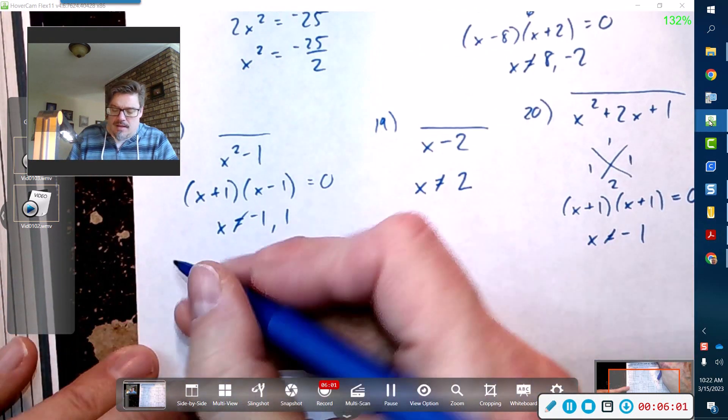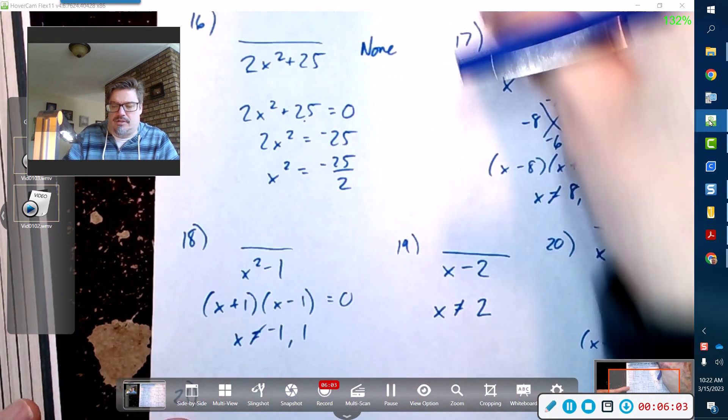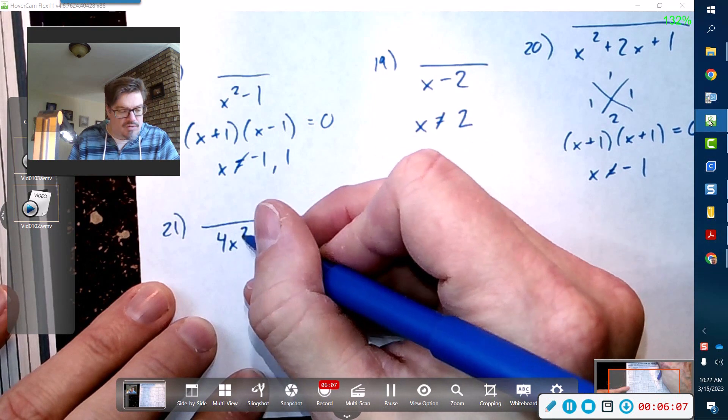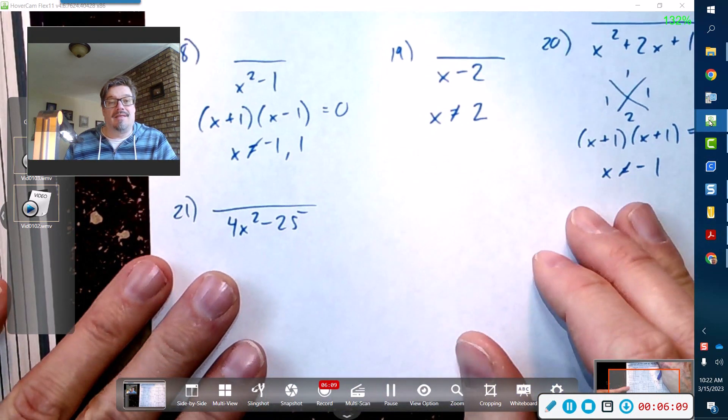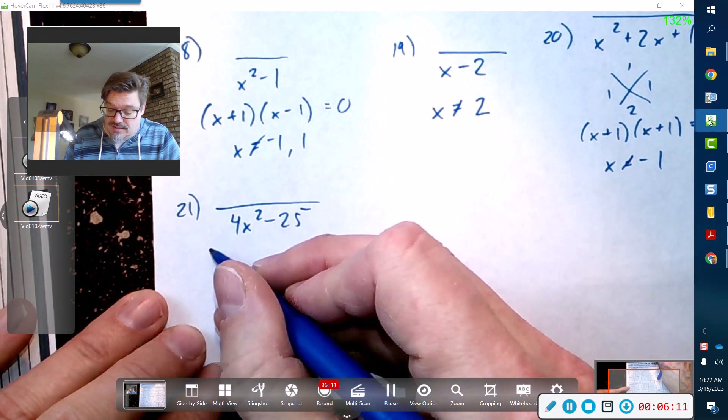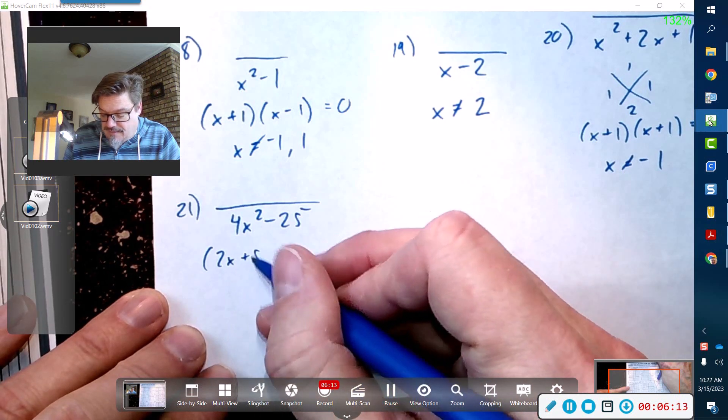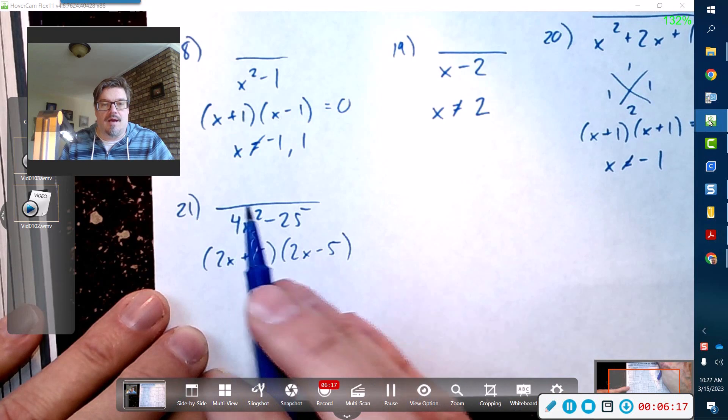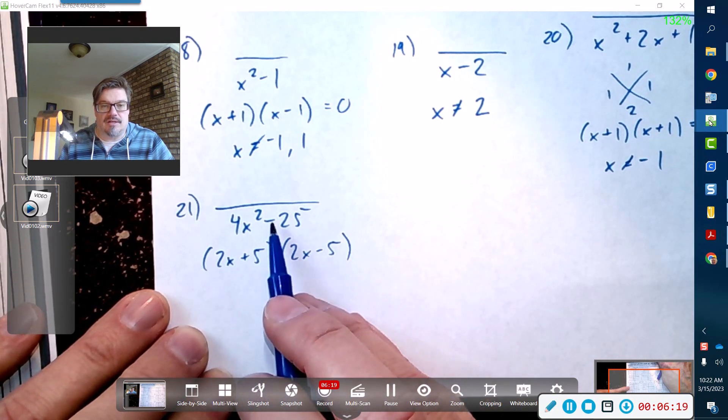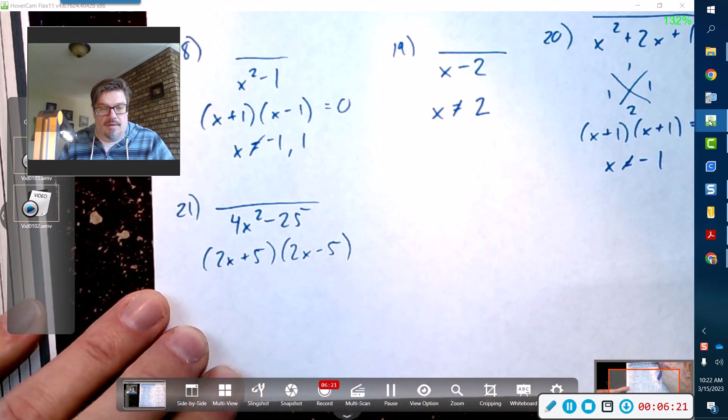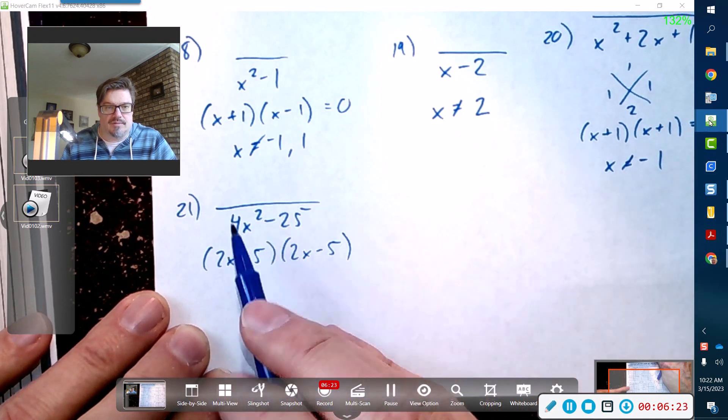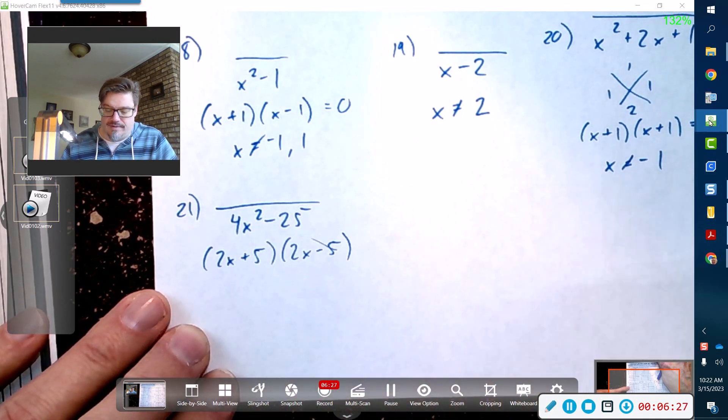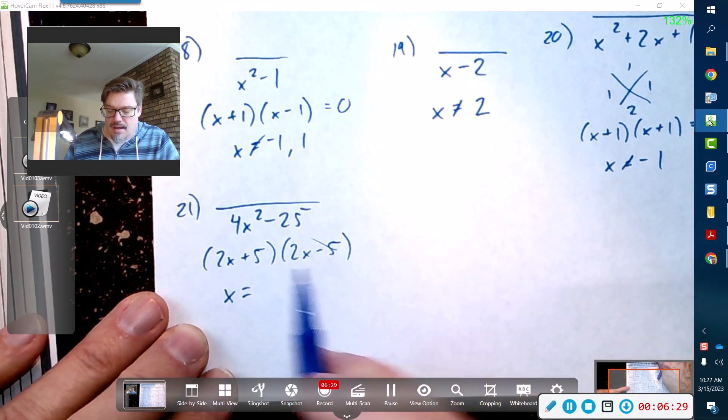Then the last one is 4x² - 25. That also is a difference of two squares. This guy is (2x + 5) and (2x - 5). That's a perfect square, that's a perfect square, subtraction in between. You just write it out, take the square root of him, take the square root of him, you've got your two parentheses. Cool.